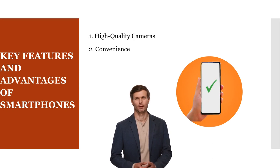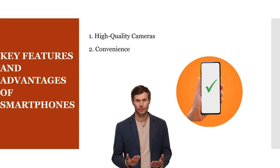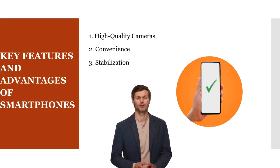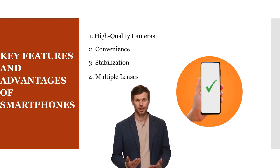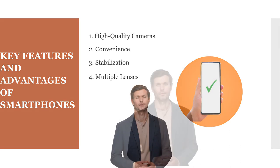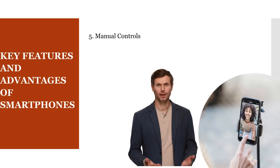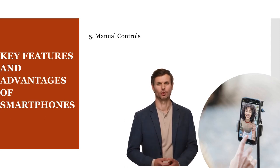You can quickly capture moments without the need for additional equipment. Smartphones often include built-in stabilization features, both optical and electronic, to help reduce shaky footage and ensure smoother video recording, even when on the move. Some smartphones come with multiple lenses, including ultra-wide, wide-angle, and telephoto lenses, allowing you to experiment with different perspectives and shooting styles. Many smartphone camera apps offer manual controls for settings like exposure, focus, white balance, and more, allowing for more creative control over your video recordings.